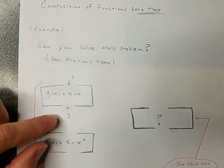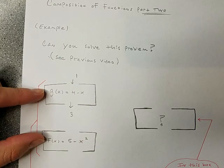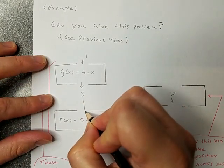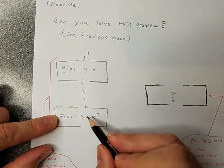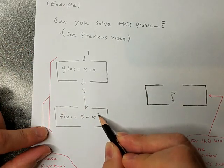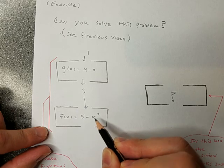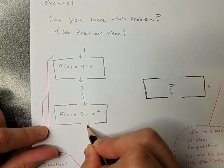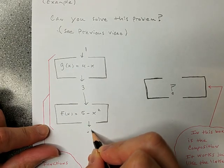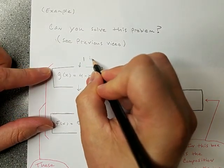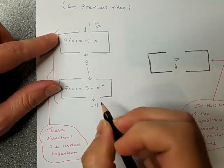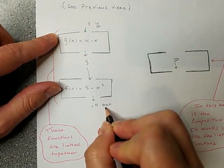And we're going to get four back out. And when I'm linking these together, I'm just saying, now take the output of this one and make it the input of that one. So it says five minus three squared. So it says five minus nine. And so our final answer is negative four. So with these linked together, then you put one in and you're going to get negative four out.